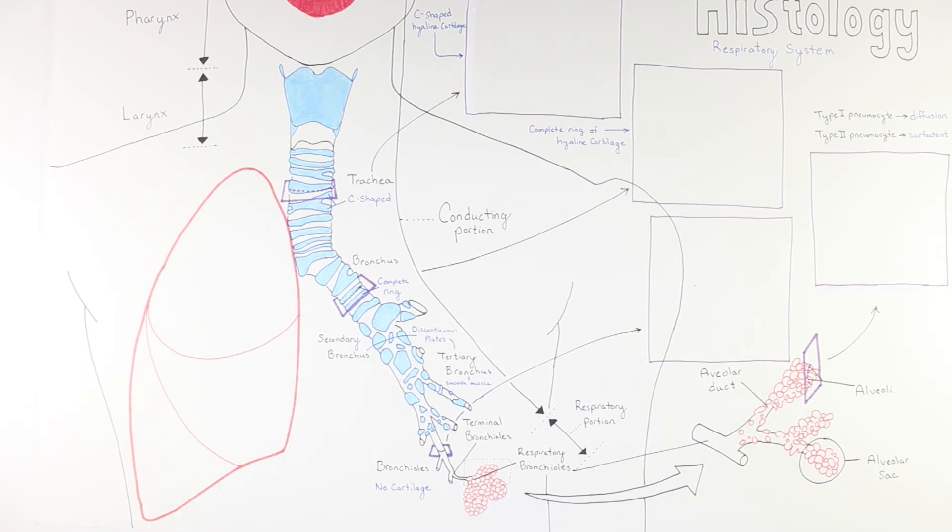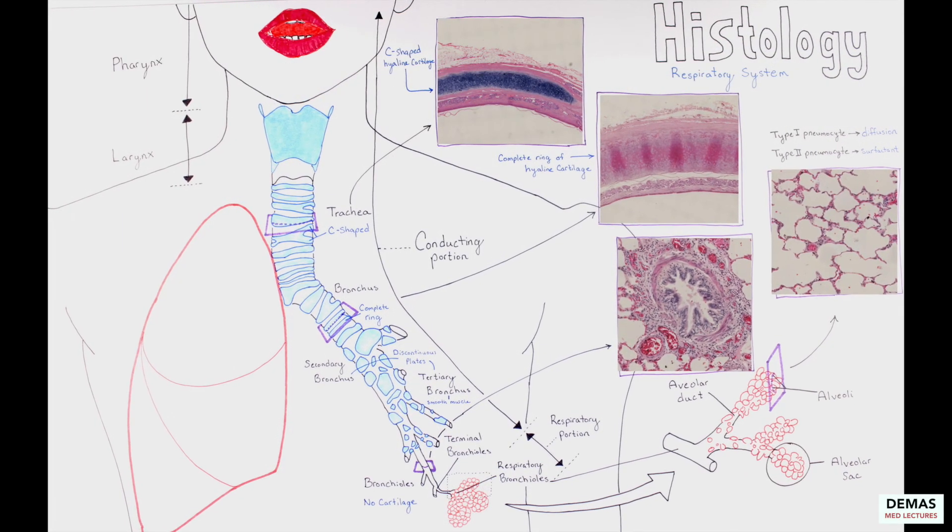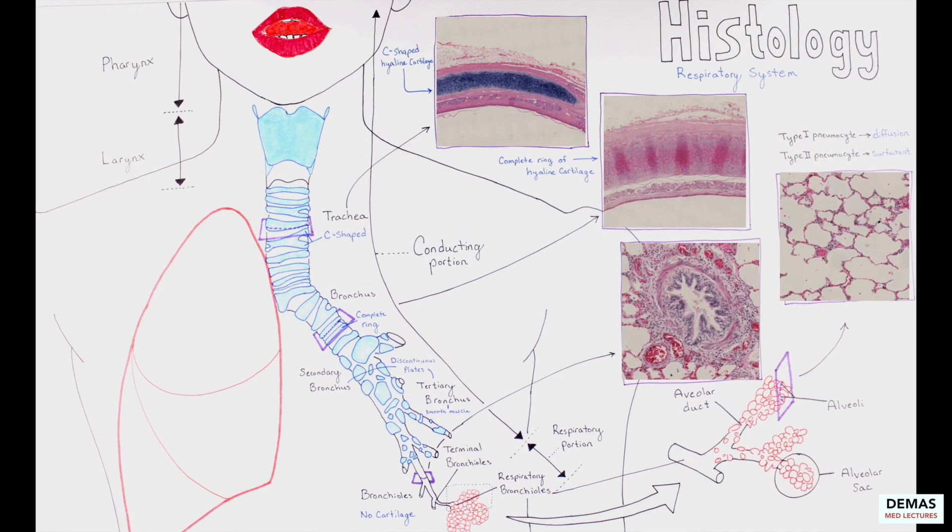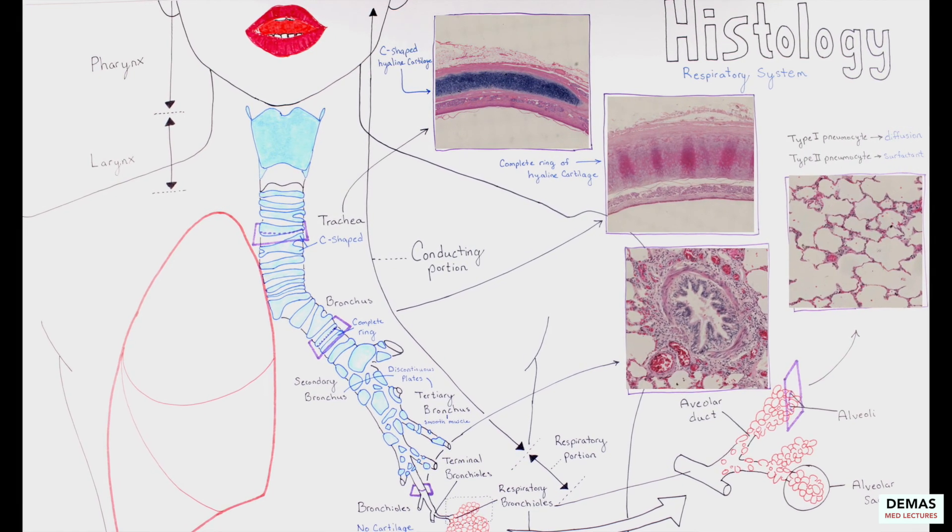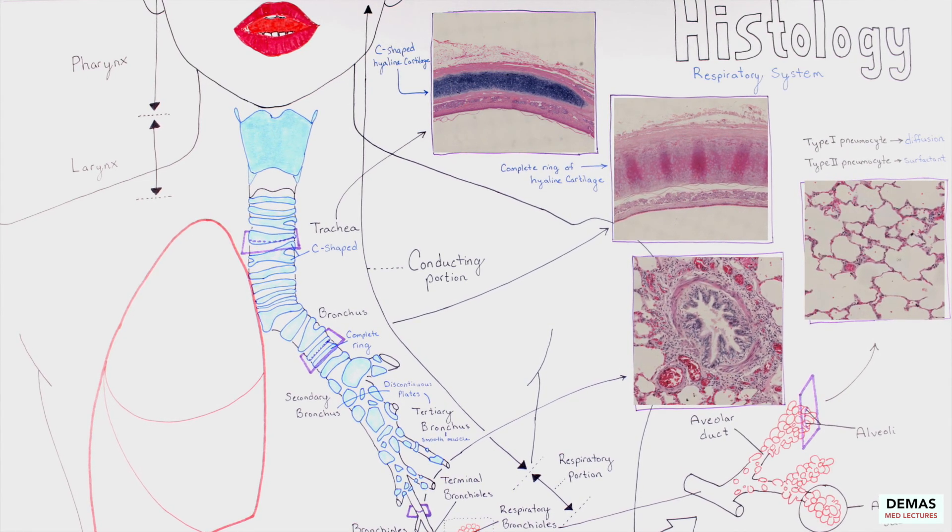And with that, we are completed with the topics for this lecture. The main takeaways and things to be familiar with in this lecture are the structures that make up the two divisions of the respiratory system, the conducting and respiratory divisions. Within each category, it is important to know the key features mentioned for each part of the respiratory tract and to be able to recognize the structure on stained slides.